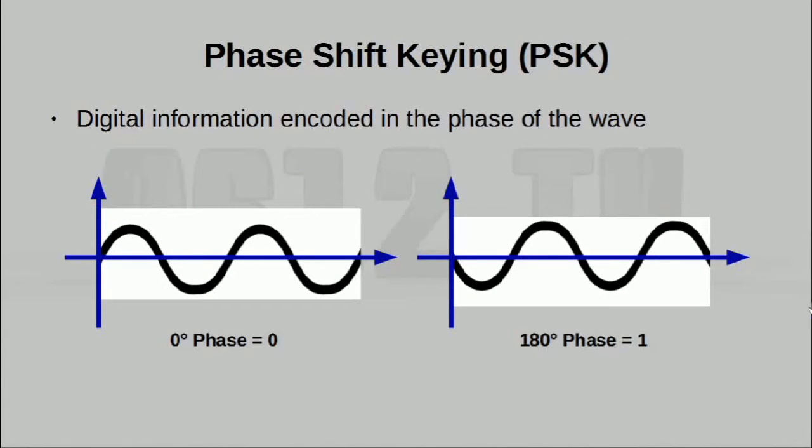The next technique is called phase shift keying, and this is when information is actually encoded in the phase of the wave. What this means of course is, unlike the previous example, no matter what bit you're trying to represent, the wave is at its full amplitude. The only difference is that, in this particular case, an inversion of the wave represents a 1, whereas the original wave represents a 0.